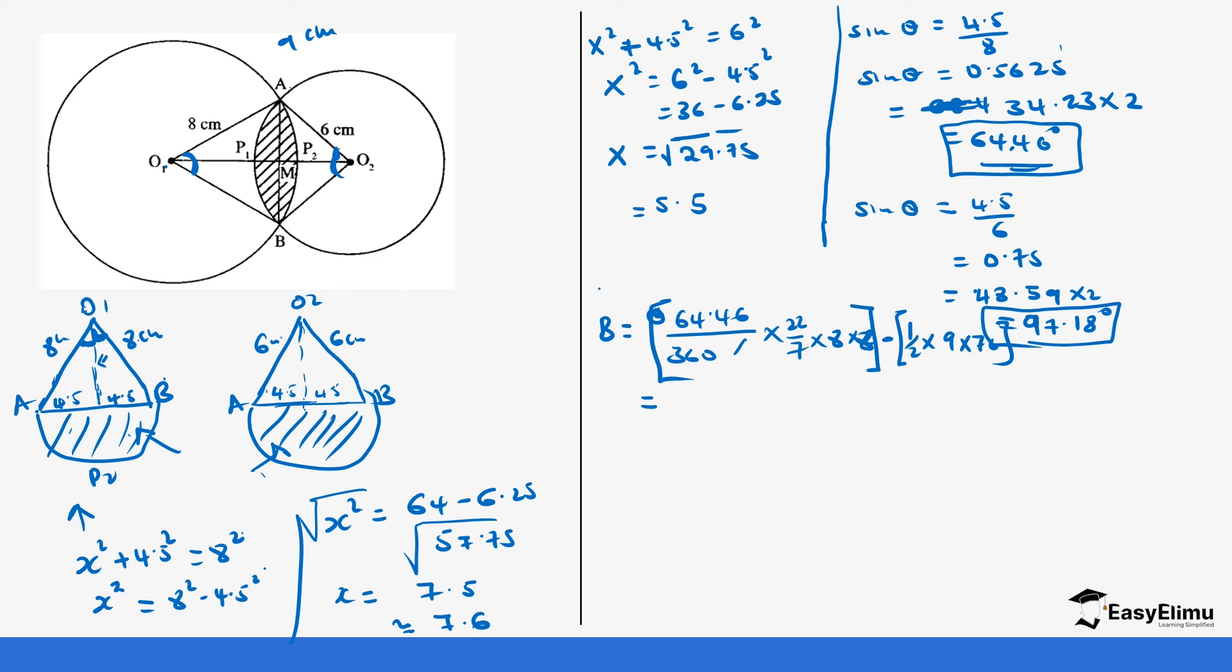So 64.46 times 22 times 8 times 8 gives us 90,759.68 divided by 2,520. If we do that division, it gives us 36.01 or 36.02 to two decimal places, minus one half, which is 4.5 times 7.6.